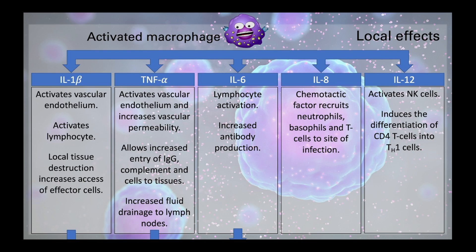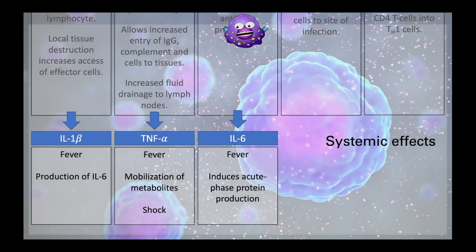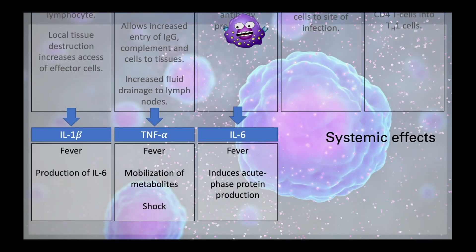Interleukin-6 has both pro- and anti-inflammatory properties, but it can drive the activation of lymphocytes and trigger B lymphocytes to produce antibodies. Interleukin-8 is the main chemotactic cytokine or chemokine for neutrophils, but it also recruits basophils and T lymphocytes to the inflammatory site, whilst interleukin-12 activates natural killer cells in a viral response. Interleukin-1-beta, TNF-alpha, and interleukin-6 also have systemic effects, such as inducing fever and the production of acute phase proteins, which are produced in the liver.